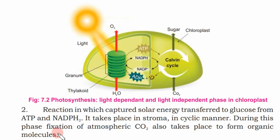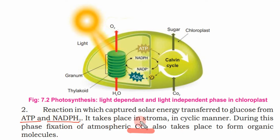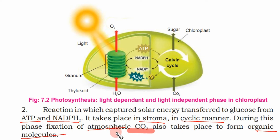During this phase, fixation of atmospheric CO2 also takes place to form organic molecules. This reaction occurs in a cyclical manner in the stroma. During this phase, atmospheric carbon dioxide is converted into organic molecules, which are ultimately used to make glucose.